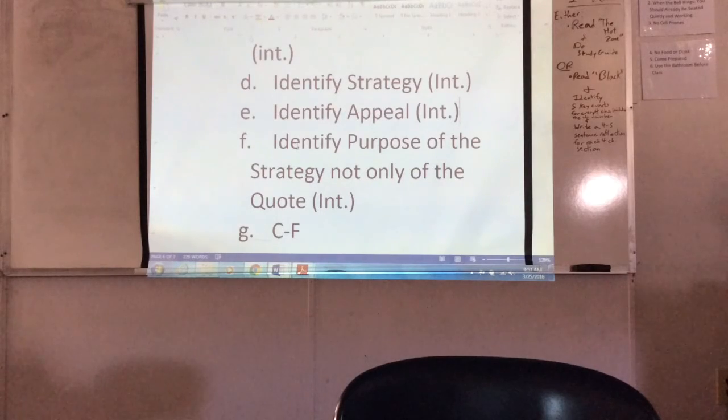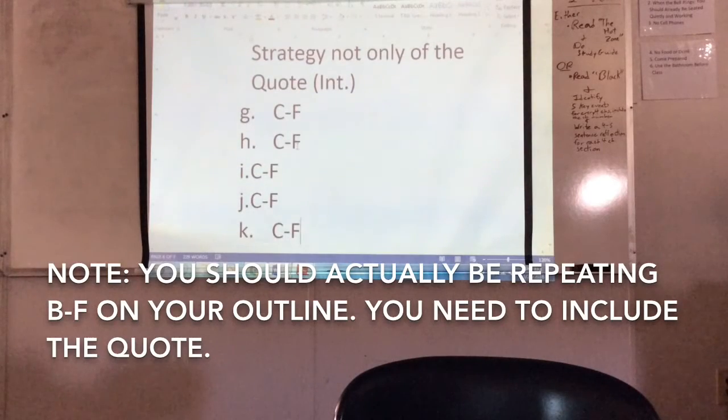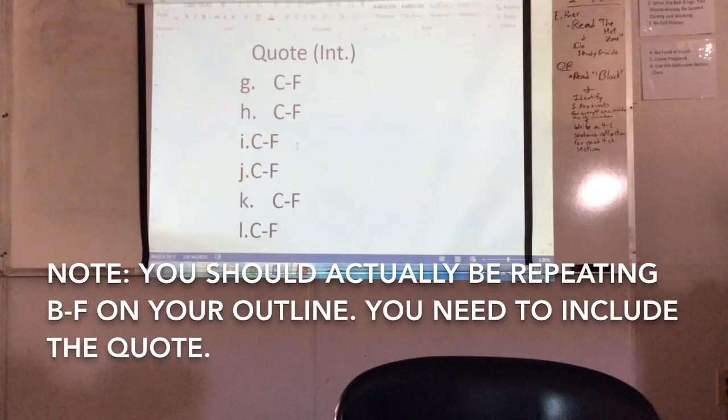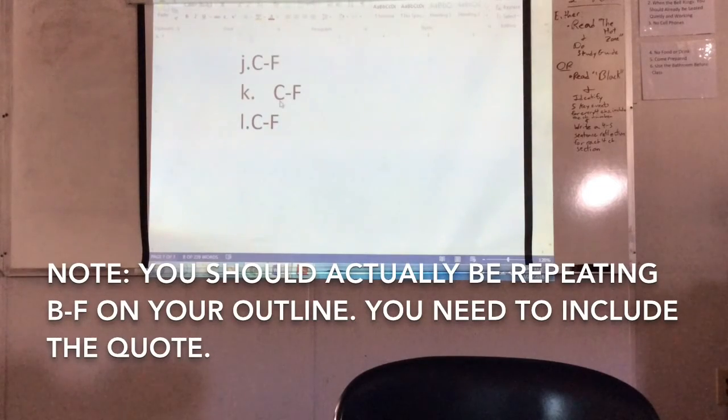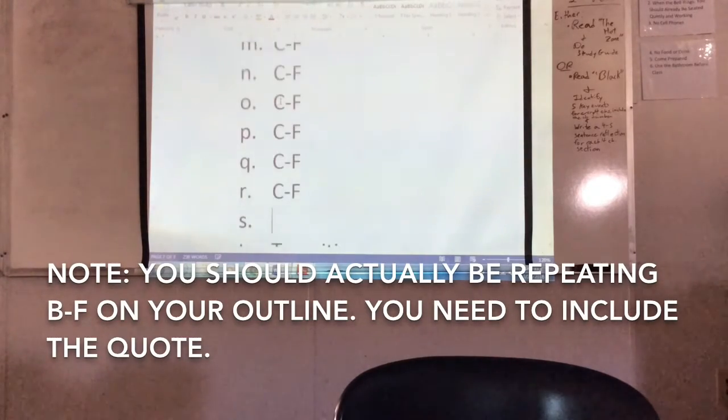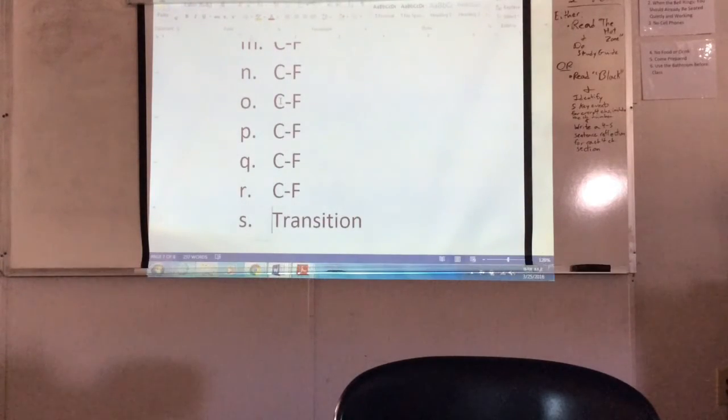You need to acknowledge what the strategy was, what was the appeal. You actually don't have to acknowledge the tone this time because you've already acknowledged it either at the beginning of the paragraph or in this part of the tonal shift itself, if there was one. And then lastly, for this particular section, you want to make sure that you identify the purpose of the strategy, just as we had talked about before. So why use allusion and why use the particular allusion that this person did use.